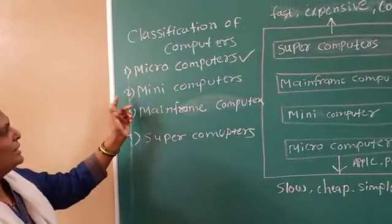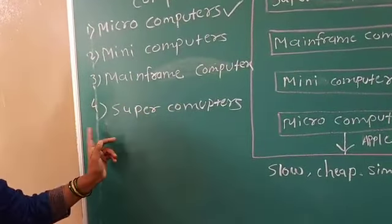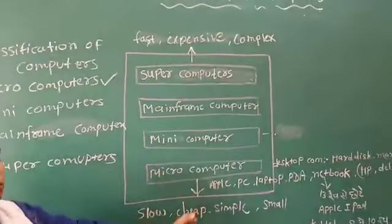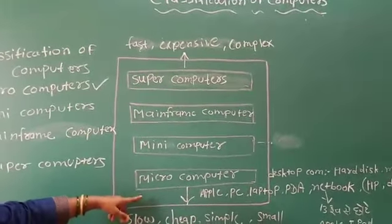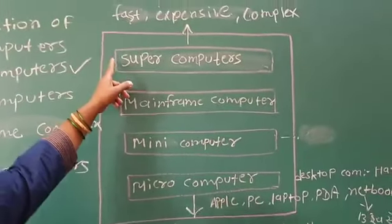First is micro computer, second is mini computer, third is mainframe computers and fourth is supercomputers. These are 4 types of computers. The first is micro computer, mini computer, mainframe computer and supercomputers.